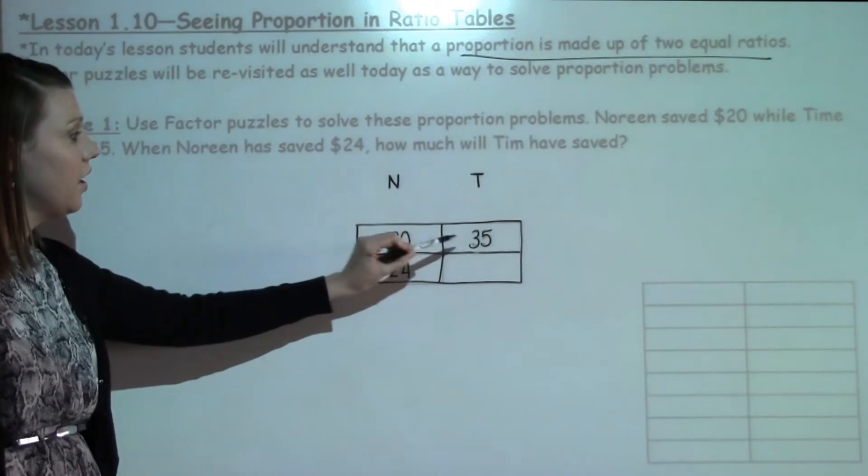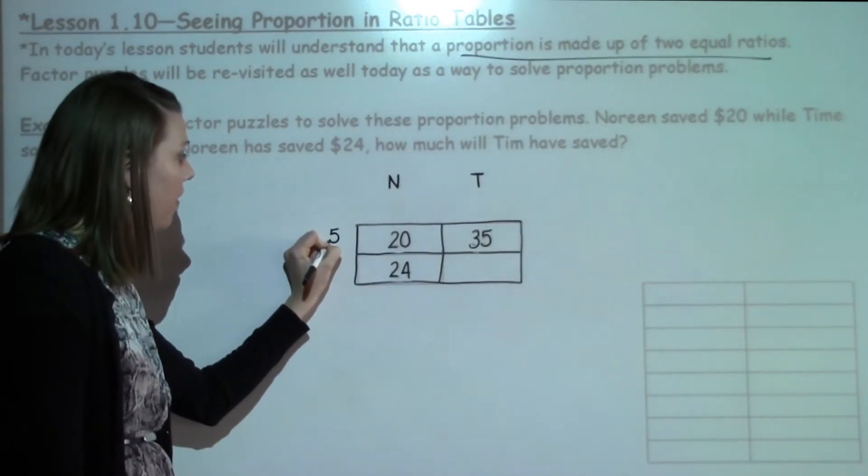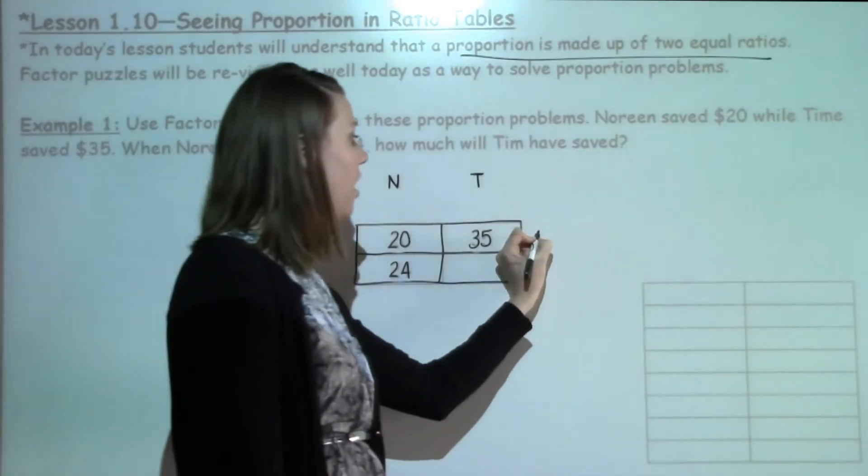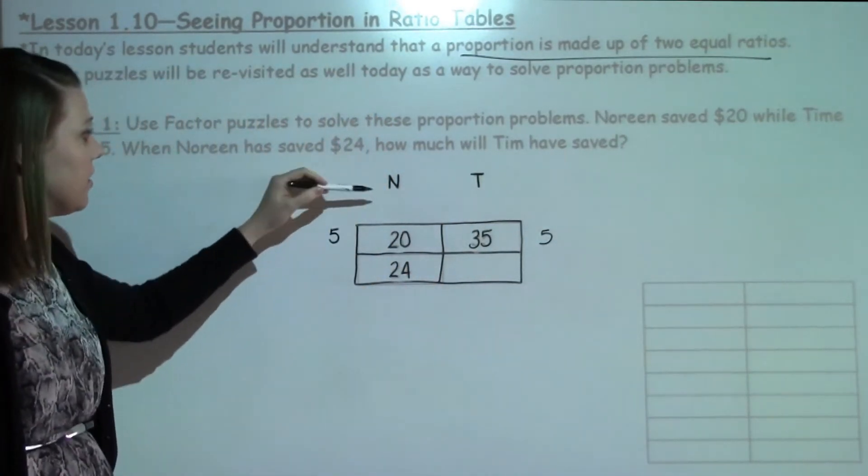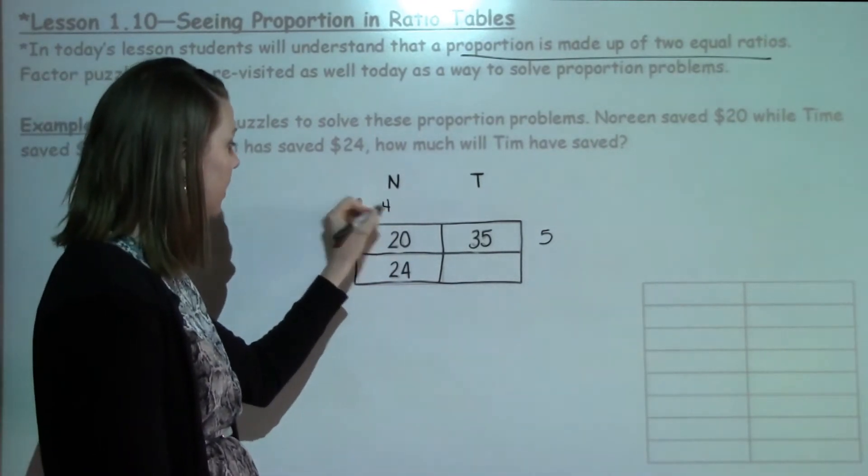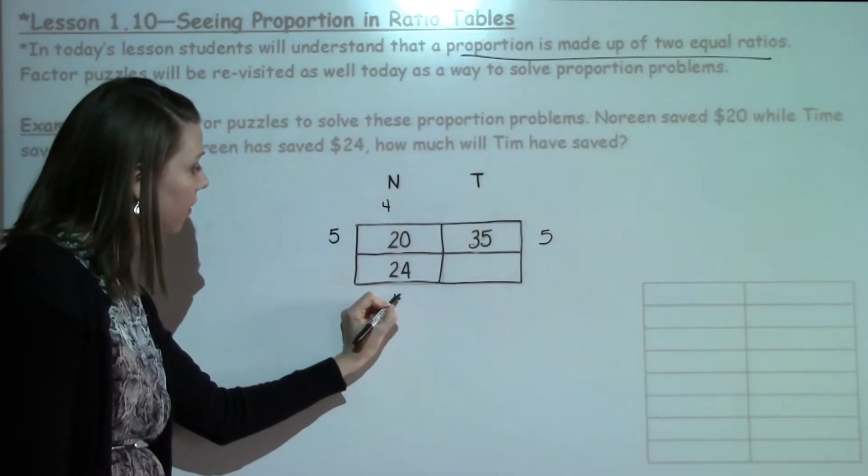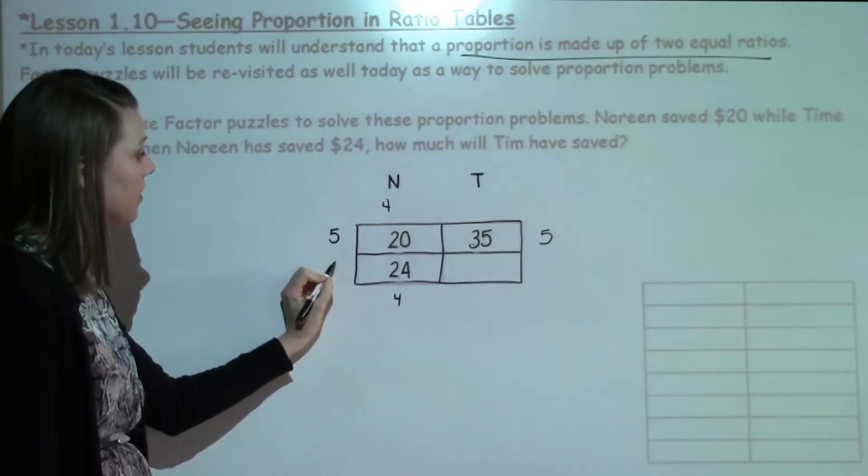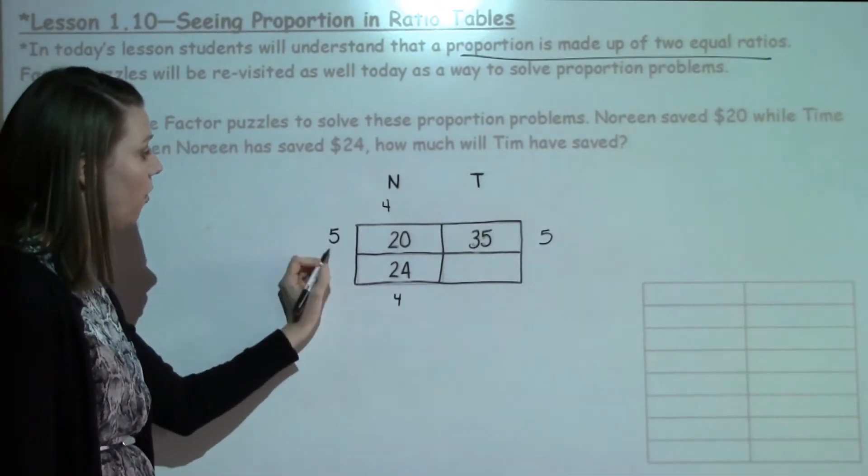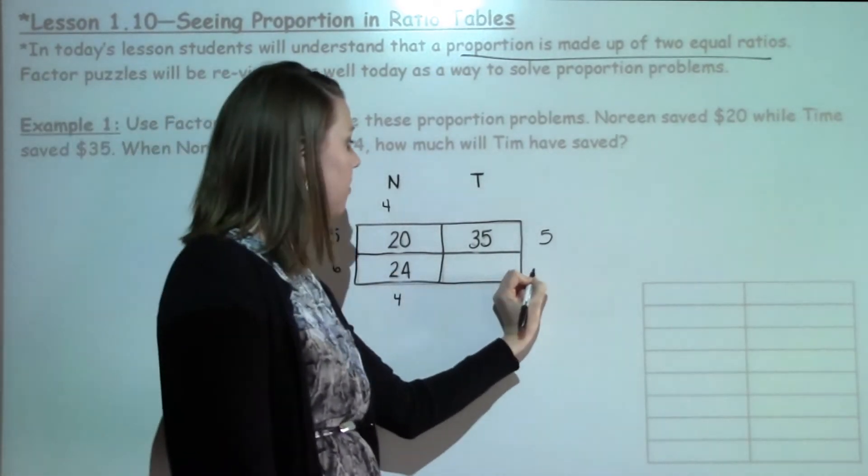I know that 20 and 35 both share a 5. I'm going to put a 5 on the outside. I'm going to shoot that 5 across to the other side. I know something times 5 gives me 20. I know that is 4 because 4 times 5 is 20. Bring that 4 down and I have to think something times 4 gives me 24. I know that's 6. I'm going to shoot that 6 right across.